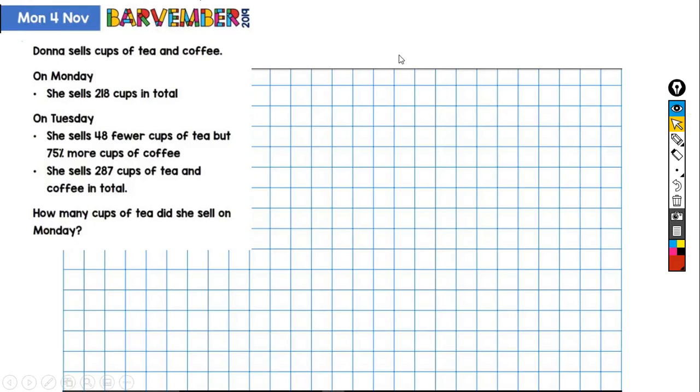Okay, the first Barvember question for 2019. Donna sells cups of tea and coffee. On Monday she sells 218 cups in total, so that's coffee and tea together. We don't know how many coffee, we don't know how many tea. On Tuesday she sells 48 fewer cups of tea, but 75% more cups of coffee. She sells 287 cups of tea and coffee in total.